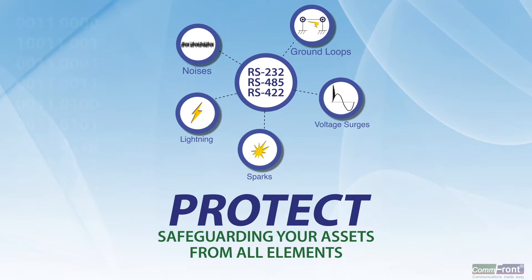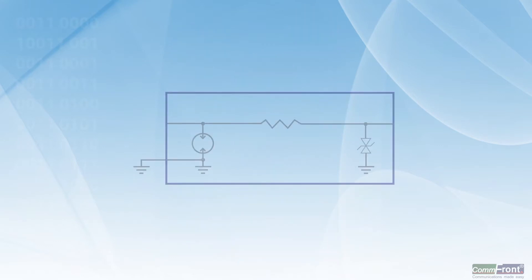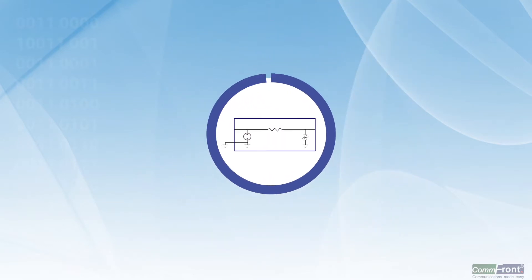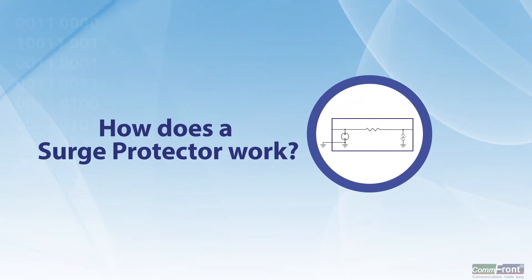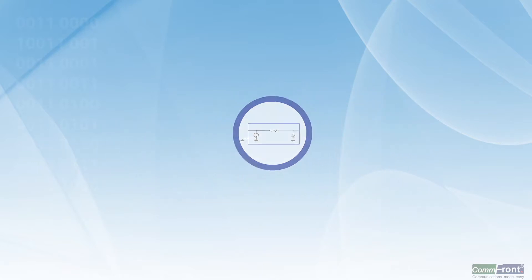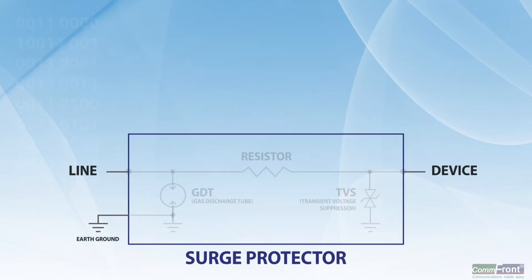The most effective solutions are optical isolators and surge protectors. Surge protectors are mainly used for protecting power and data lines against electrical surges and spikes, including those caused by lightning. The main function of a surge protector is to limit the voltage introduced to an electrical device by either blocking or shorting to ground any voltages above a safe threshold.